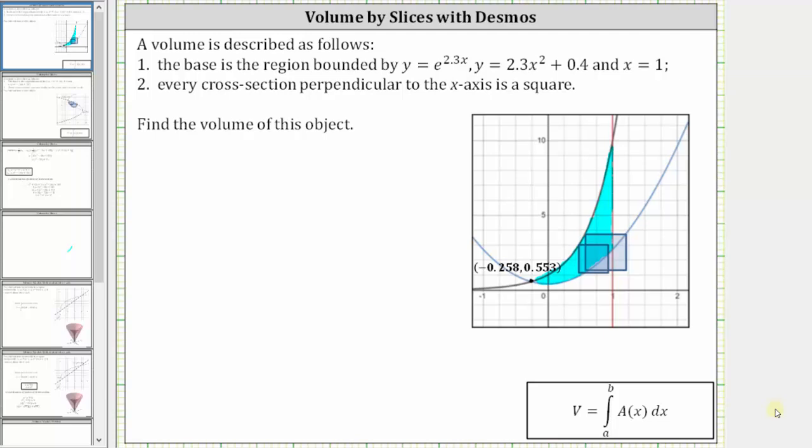Every cross-section perpendicular to the x-axis is a square. Notice I've shown two slices of the solid on the graph and both slices are squares. The volume is equal to the integral from a to b of a of x, differential x, where a of x is the area of one slice.